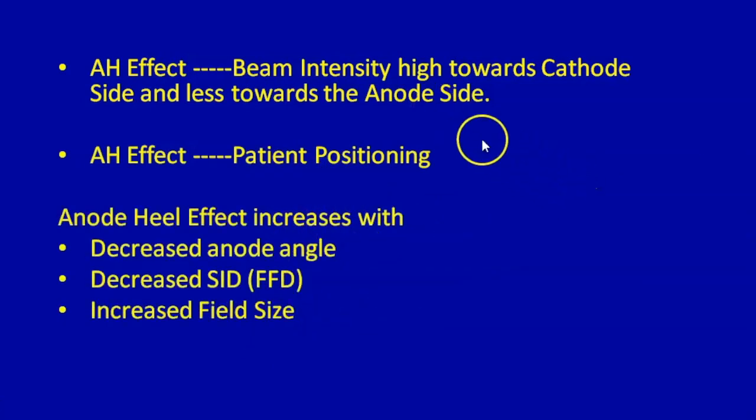Summarizing the anode heel effect, the beam intensity is high towards the cathode side and less intense towards the anode side. We can take advantage of anode heel effect and position the patient accordingly such that the more dense parts are placed towards the cathode side and the less dense parts are placed towards the anode side.